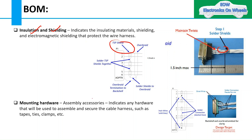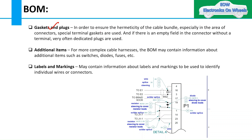Mounting hardware and assembly accessories indicates any hardware that will be used to assemble and secure the cable harness, such as tapes, ties, clamps, etc. Gaskets and plugs are used in order to ensure the hermeticity of the cable bundle, especially in the area of connectors, where special terminal gaskets are used, and if there is an empty field in the connector without a terminal, dedicated plugs are very often used. For more complex cable harnesses, the BOM may also contain information about additional items such as switches, diodes, fuses, etc. Labels and markings may contain information about labels and markings used to identify individual wires or connectors.